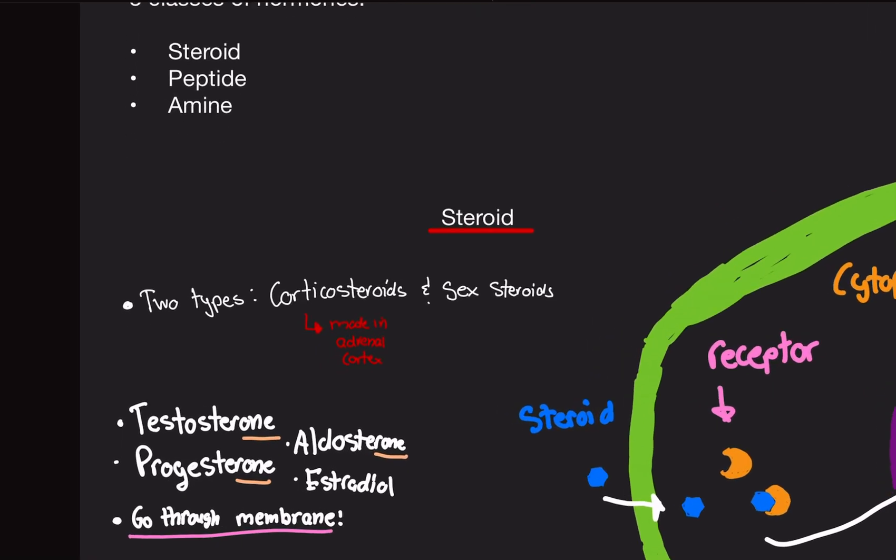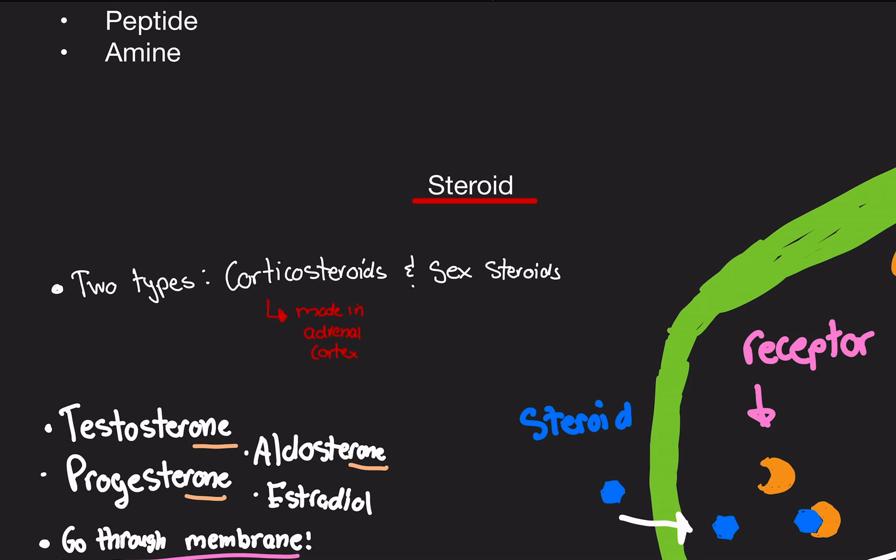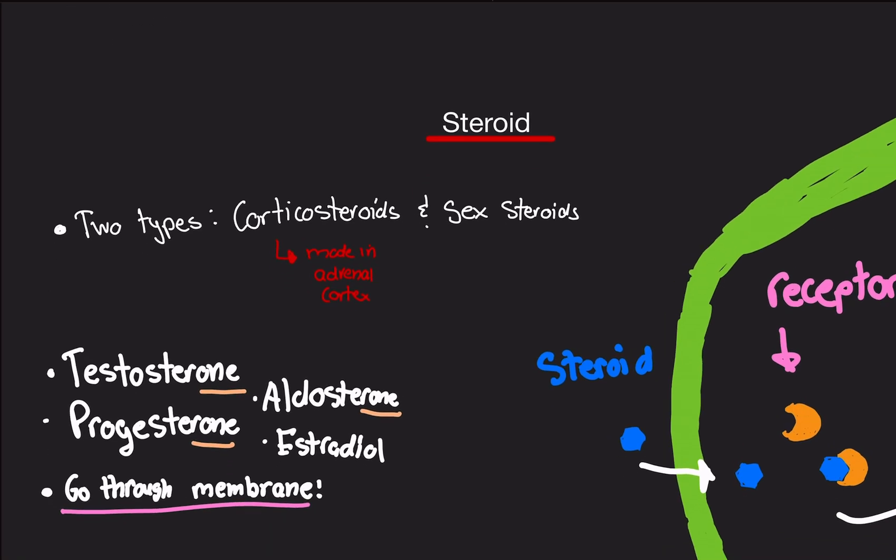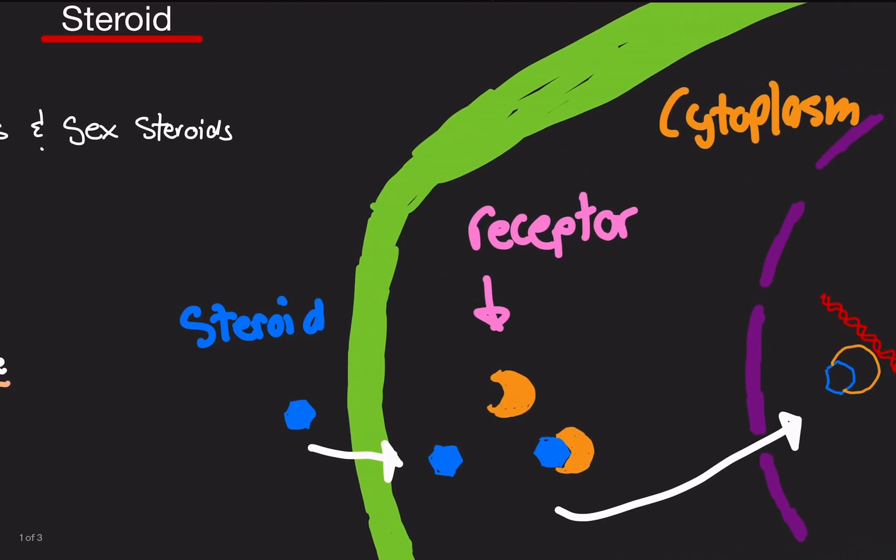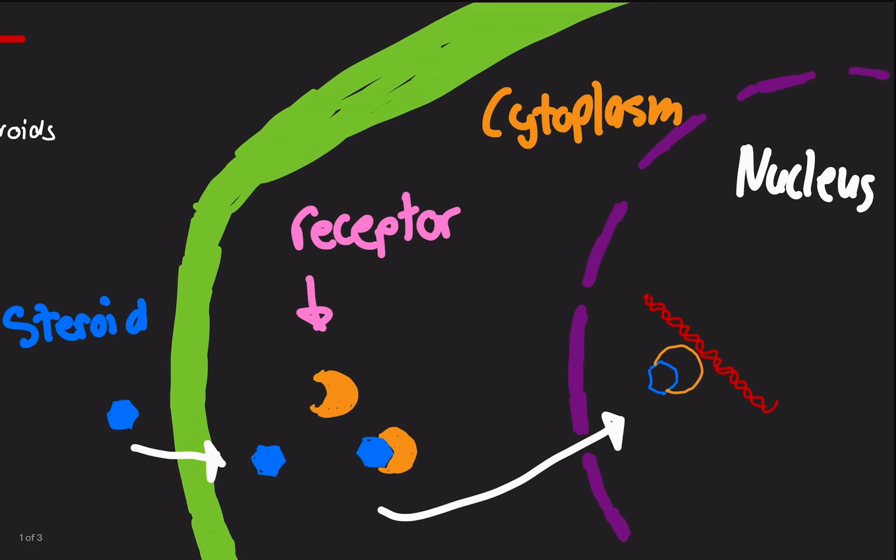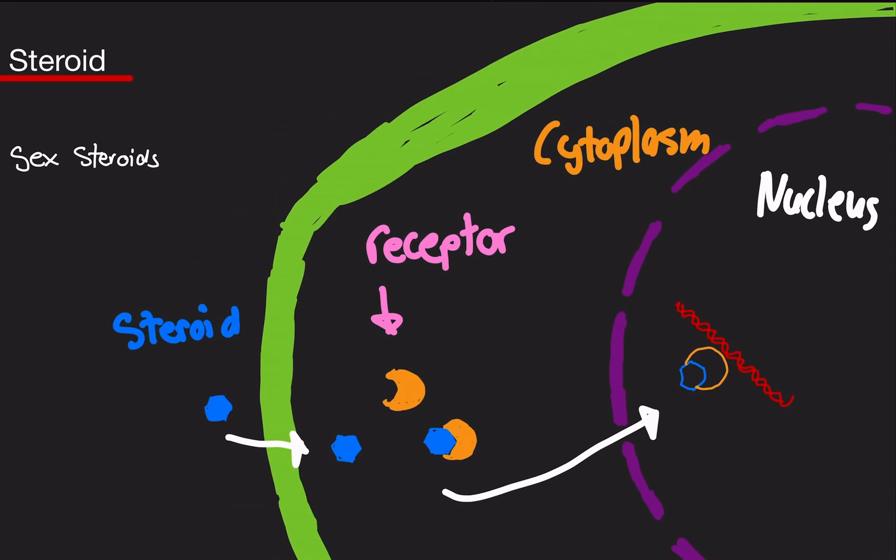So just a little recap. Steroid hormones are derived from cholesterol, usually. And notice the ending, -rone or -one. A lot of them end in that suffix. Not estradiol, that's different, but most of them. And they go right through the membrane, right through the bilayer, bind to a receptor in the cytoplasm, and go straight into the nucleus.